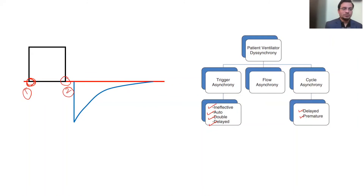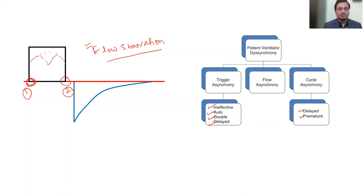The third type is flow asynchrony — when the flow is not adequate. This is called flow starvation, or conversely, when the ventilator delivers excessively high flow that the patient does not want — that is also a type of asynchrony. So only three types of asynchrony are described: trigger asynchrony, cycle asynchrony, and flow asynchrony.